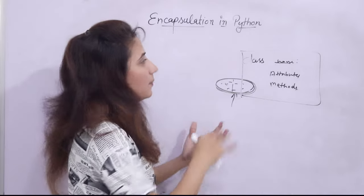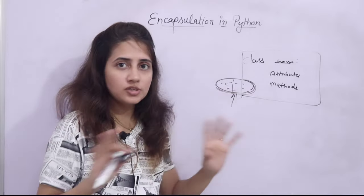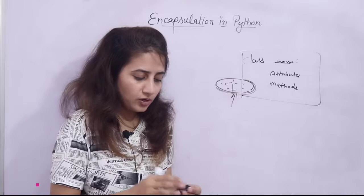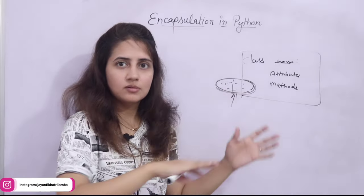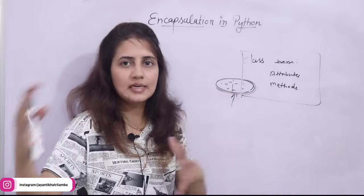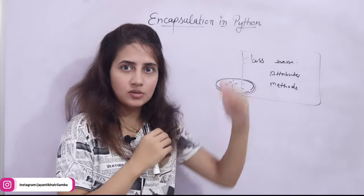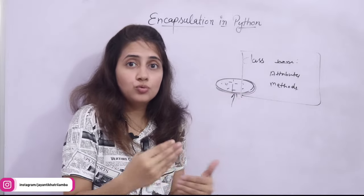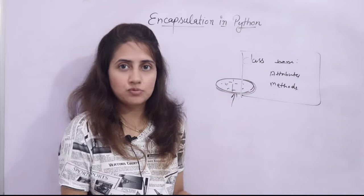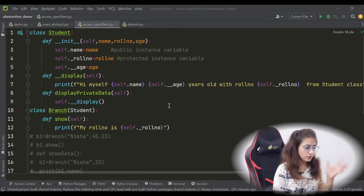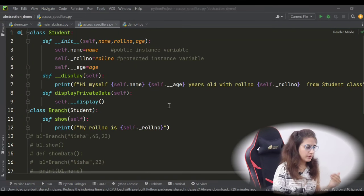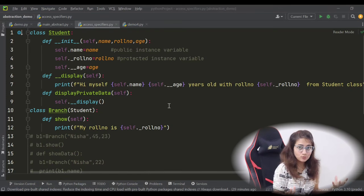Now the basics of encapsulation should be clear. Let me show you the practical example from the previous video where we discussed access specifiers — public, private, and protected. Because using access specifiers is how we achieve encapsulation and hide our data. This name is public, this one is protected.